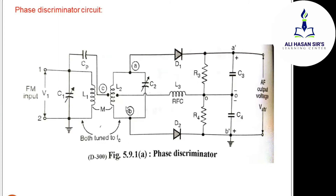Both tuned circuits L1C1 and L2C2 are tuned to the carrier frequency — the FM carrier frequency. When the input frequency decreases or deviates, the tuned circuits respond accordingly to produce amplitude variation.